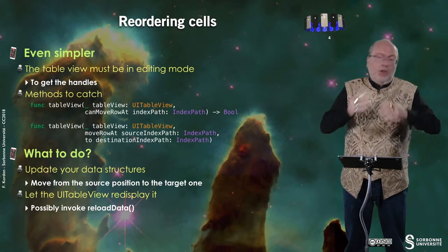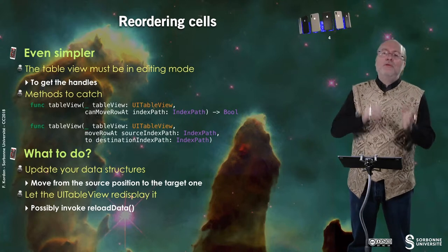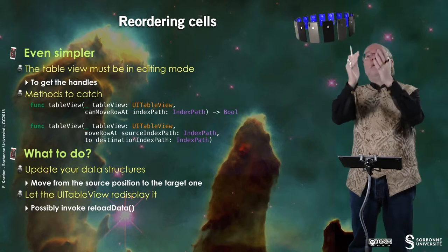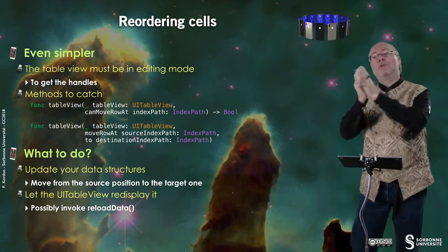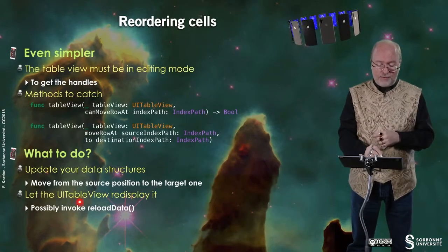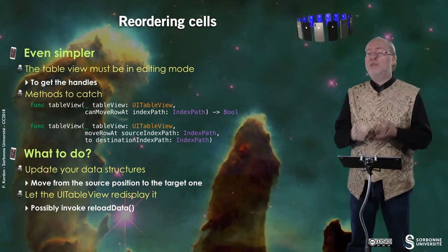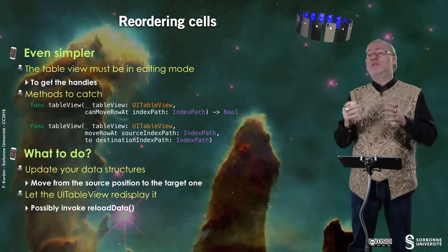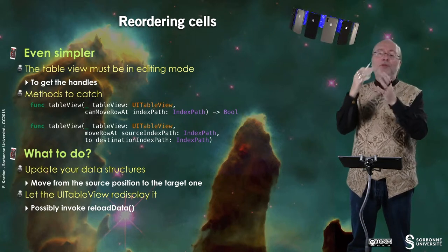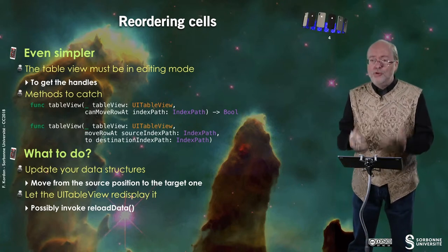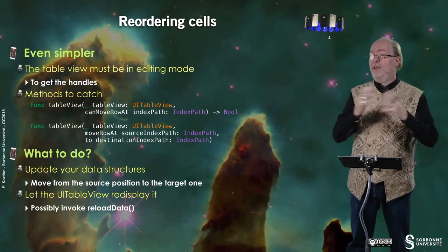So what do you do then? Just update your data structure — move the data corresponding to your cell from its originating place to its target place — then let the UITableView re-display it. You may have to invoke reloadData, typically in a situation where you have a distinction between odd and even rows, so that the distinction remains possible. In our previous example, you must invoke reloadData; otherwise, there is no need to do so.